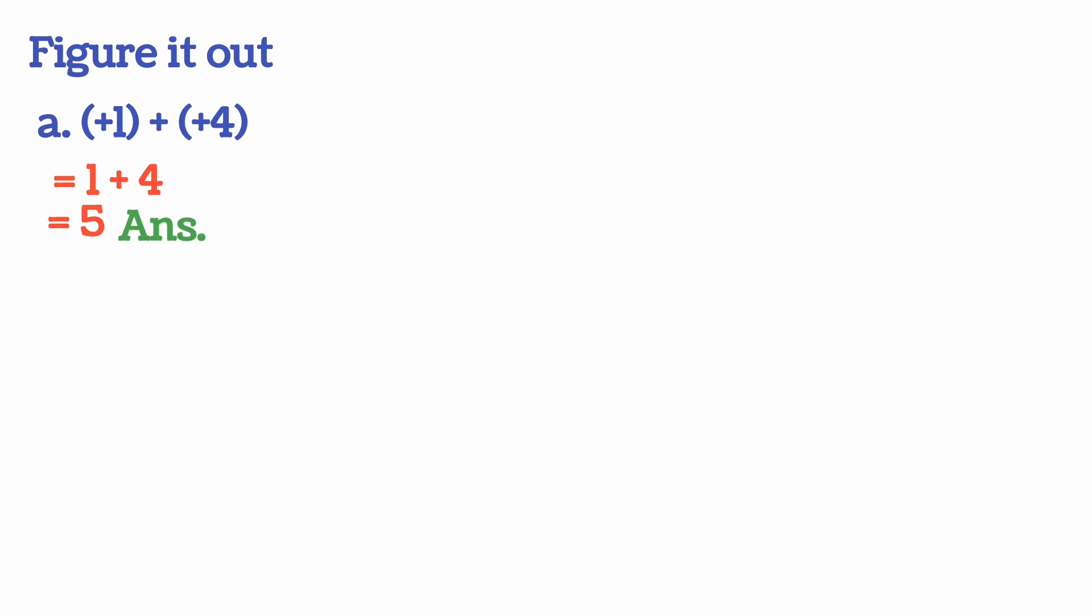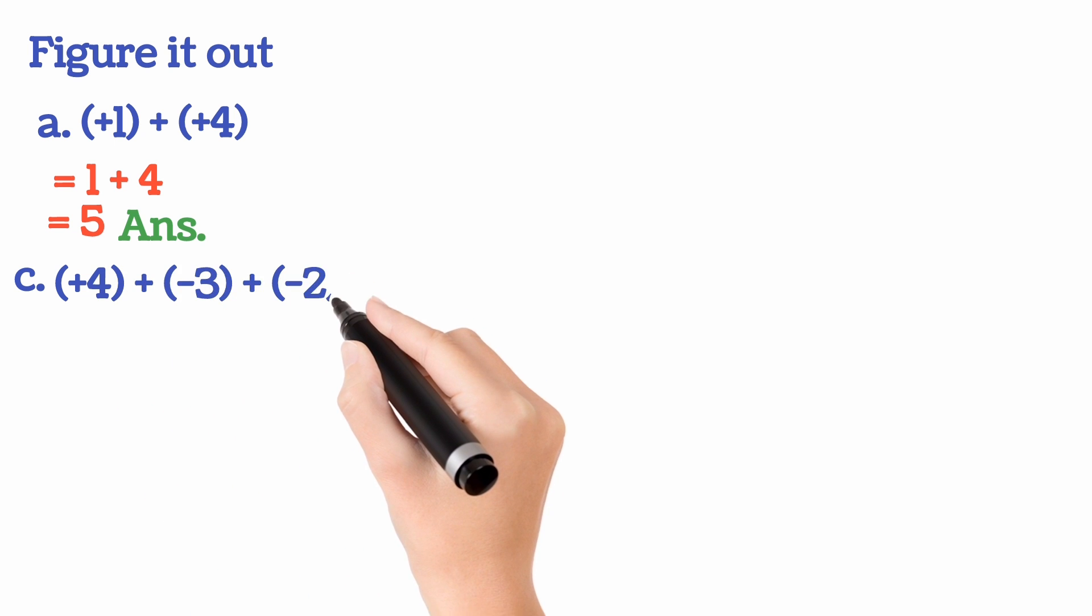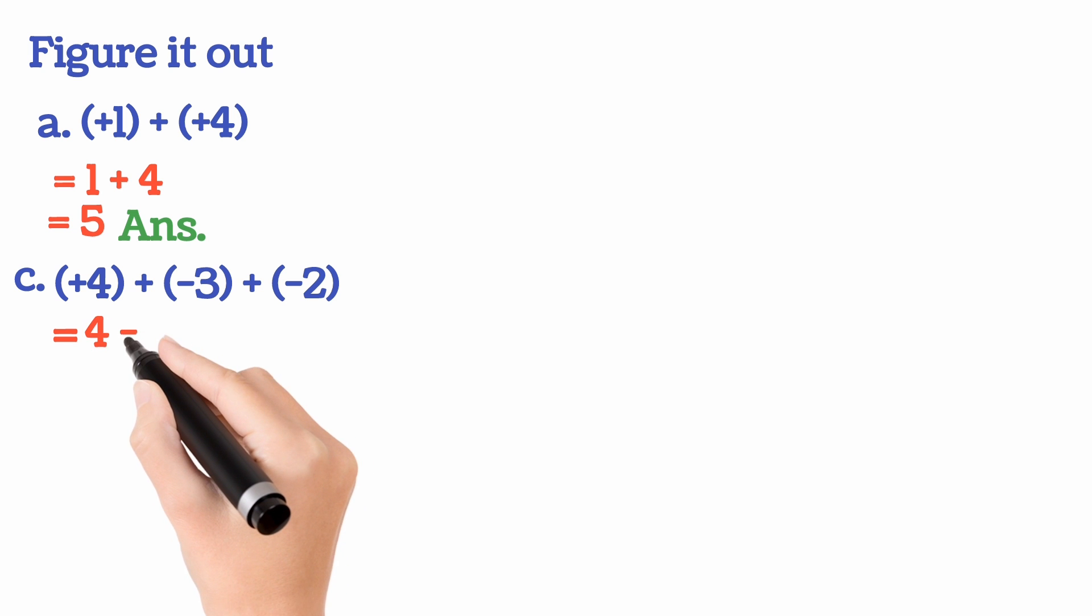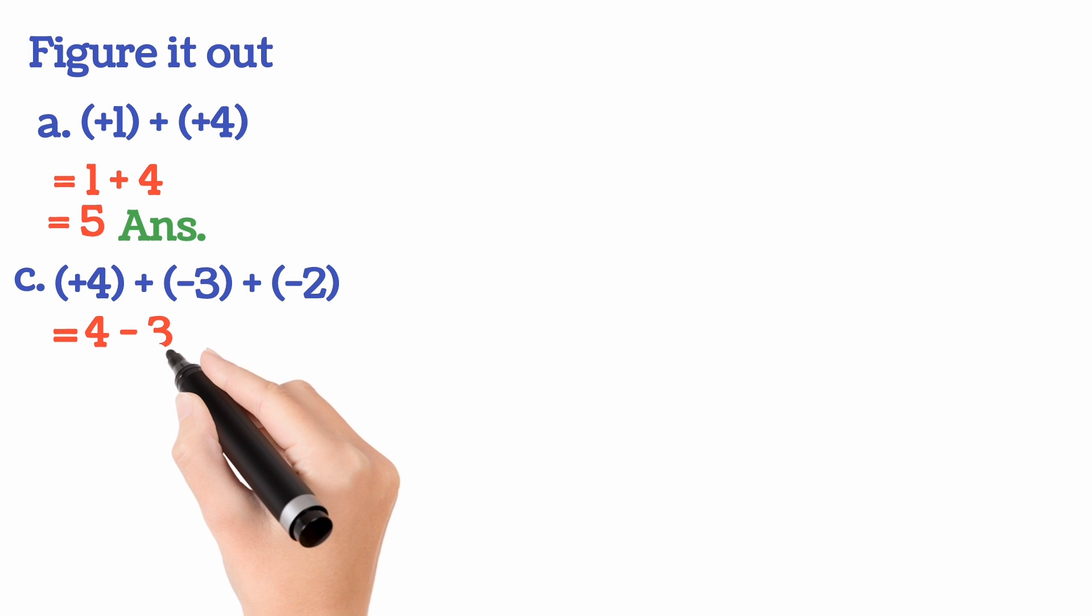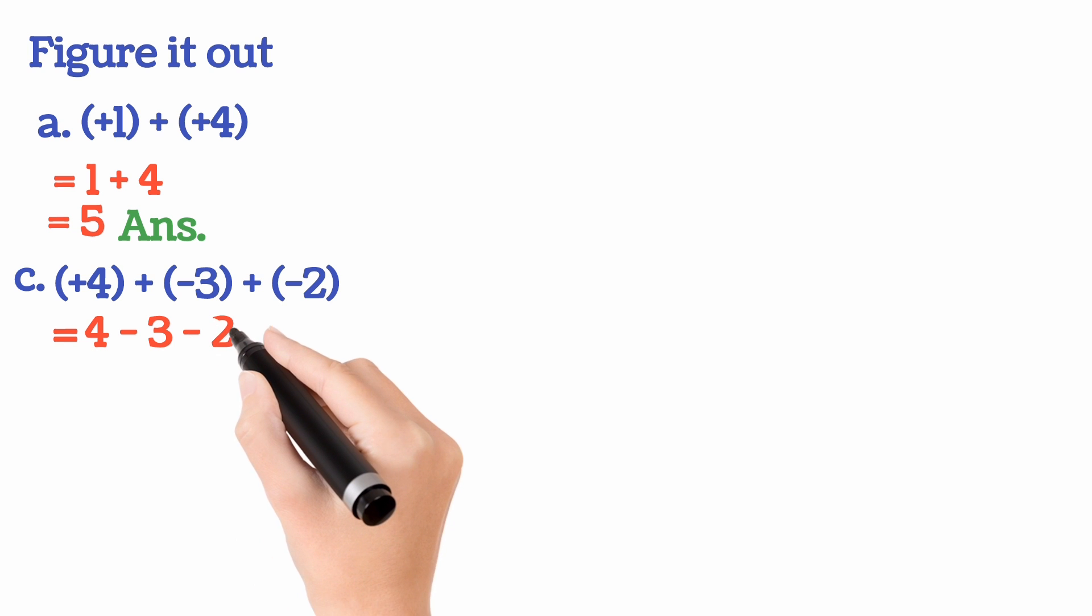And second number B is the same one, so I am not doing that. I am doing question number C. That is, (+4) + (-3) + (-2). Now carefully see when you will remove the bracket. Our next step is we will remove the bracket. So first is plus 4, so write that 4 first. Then plus, minus, minus 3. Again, plus, minus, minus 2. Now see...